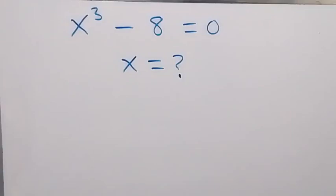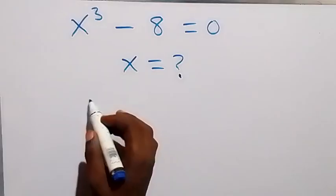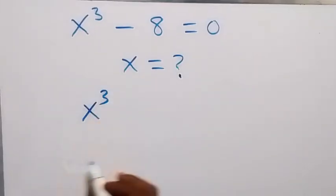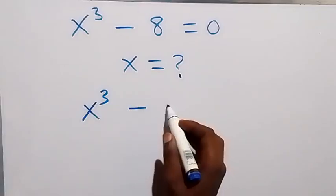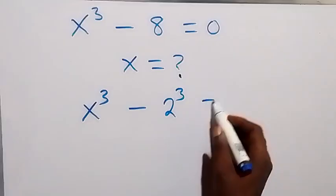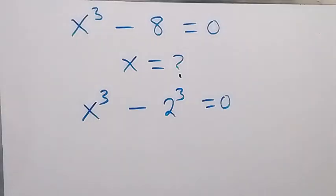Hello, you are welcome. How to solve this nice math problem. We have x raised to power 3 minus 8 equals 0. From here we want to find all the values of x. Then from here we can write this as x raised to power 3 minus 2 raised to power 3 equals 0.